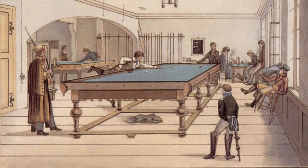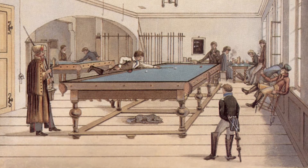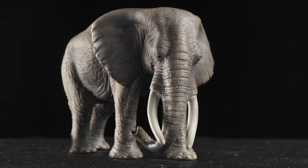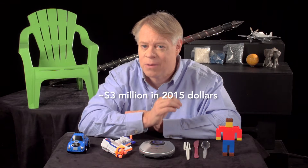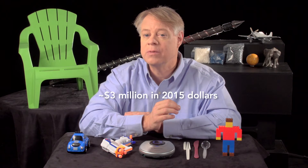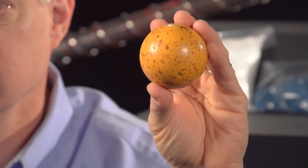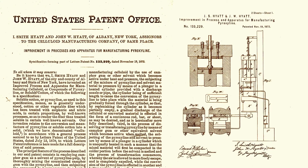Injection molding was invented to solve a problem for billiards. In the 19th century, billiard balls were composed of ivory harvested from the tusks of African elephants. This devastated the elephant population, so a billiards manufacturer offered a $10,000 prize for a replacement for ivory. This spurred John Wesley Hyatt to develop one of the first plastics, celluloid, to create billiard balls. He patented an apparatus for molding products from celluloid — this apparatus was the birth of plastic injection molding.